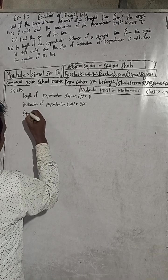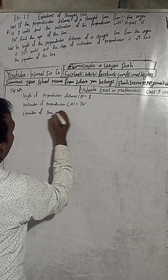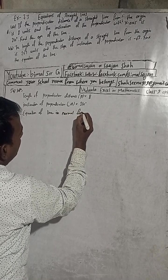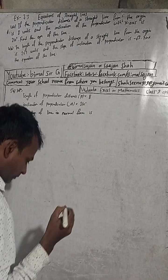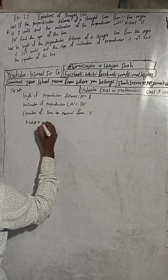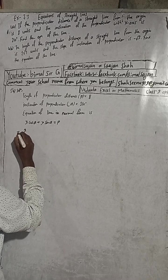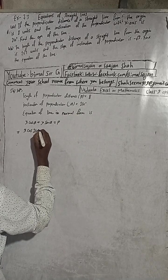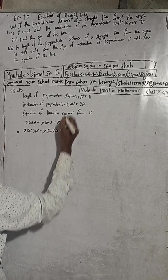The equation of a line in normal form is: x cos α + y sin α = p. So x cos 210° plus y sin 210° is equal to p, which is 8.